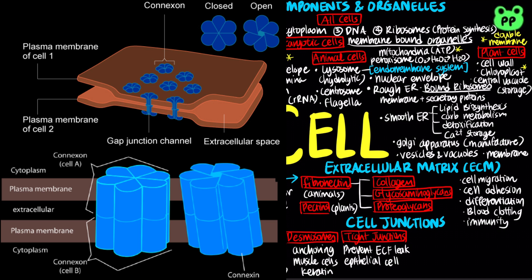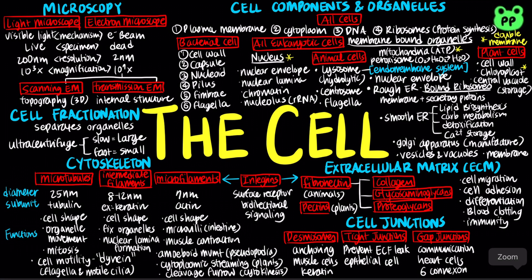Lastly, gap junctions provide cytoplasmic channels between adjacent cells. They function in cell-to-cell communication and are responsible for synchronized contraction in heart cells. They are made of six subunits called connexons, and each connexon is composed of six connexins.